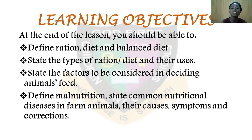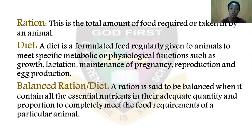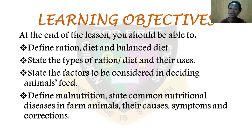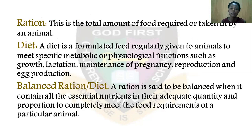Before we go into the topic, let's quickly do an overview of what we talked about in animal nutrition. It is important that a farmer understands the nutrients and the best way to feed animals for maximum productivity, because the farmer is keeping animals for meat, eggs, and other products. We also looked at different types of feeds — carbohydrate concentrates, protein concentrates, and others.